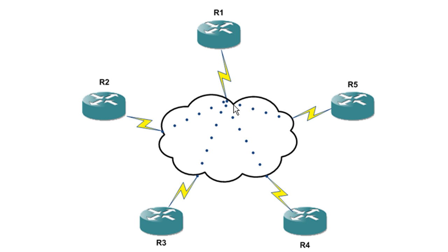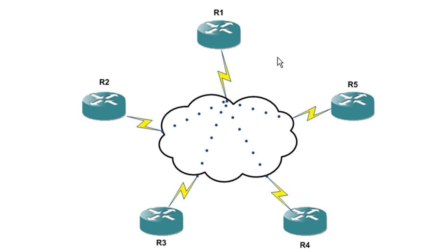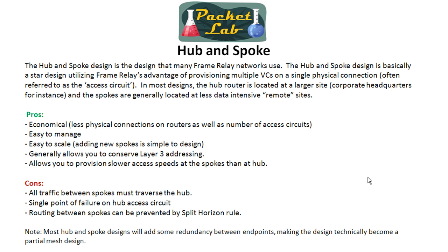Generally your hub is going to need to have bigger bandwidth than your spokes, because at any given time each of these spokes starts transmitting its full available data rate — this one's 128, this one's 512, this is 64 — your hub is going to have to be able to absorb all that. We'll get into this in a lot more detail when we start looking at traffic shaping.